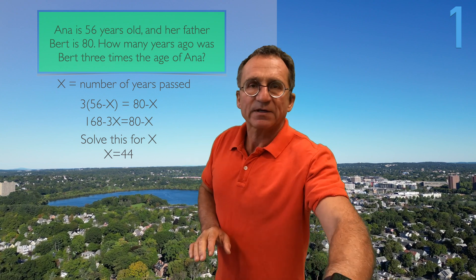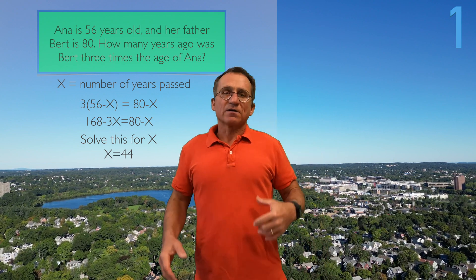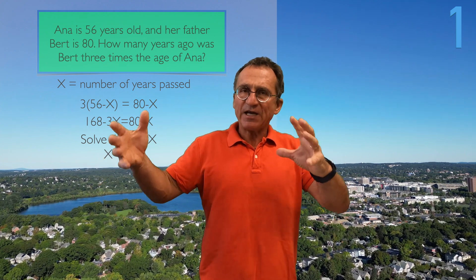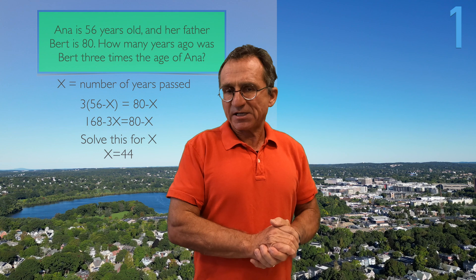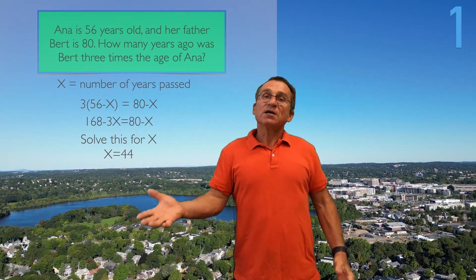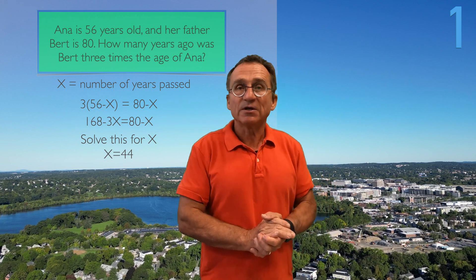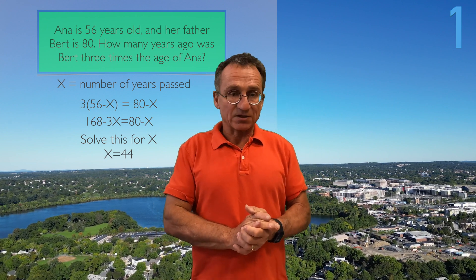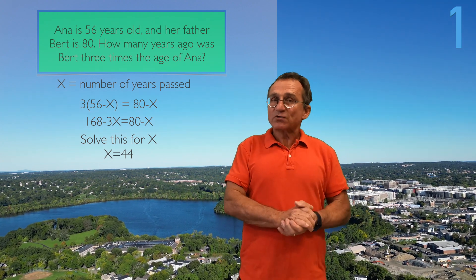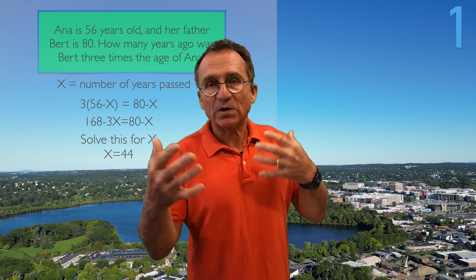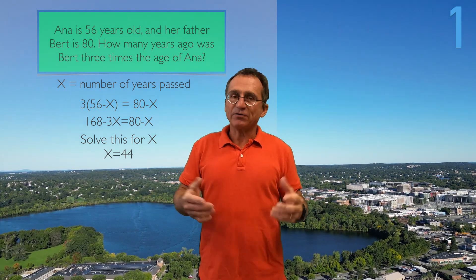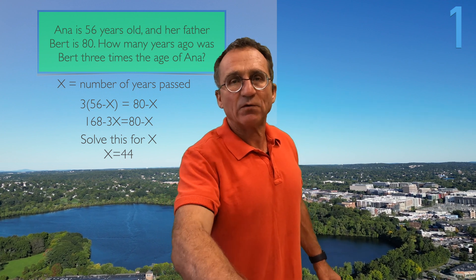So what we have here is 3 times (56 minus x) — that's the age of Anna x years ago — and this times 3 should equal (80 minus x), the age of her father x years ago. Then we solve that: you move the variable to one side and all the other stuff to the other side, and you get the solution x is equal to 44.